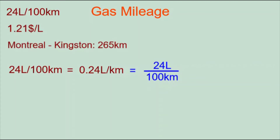Let's say we're calculating the cost of gas for a trip from Montreal to Kingston, which is 265 kilometers, at a time when gas is costing $1.21 per liter. Right away we run into a possible problem: are we really driving 265 kilometers for this trip? The answer is no — it's usually assumed to be a round trip, so we're actually driving double that distance.